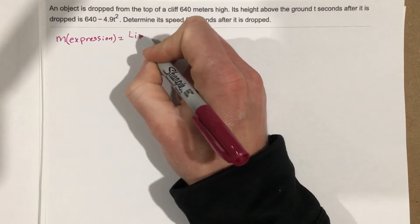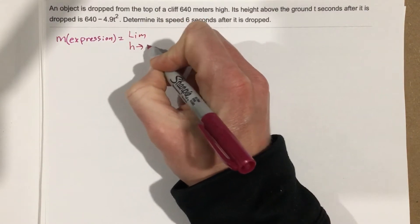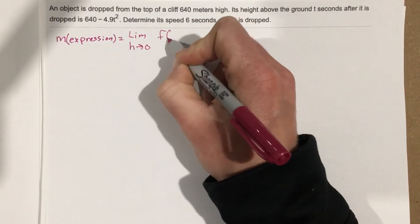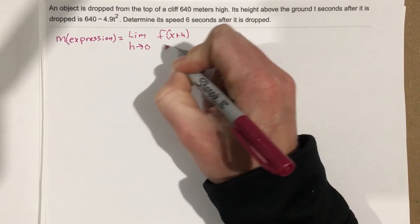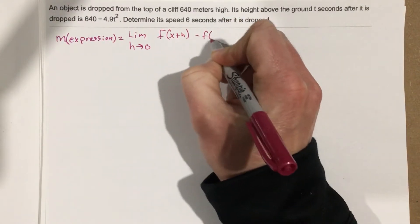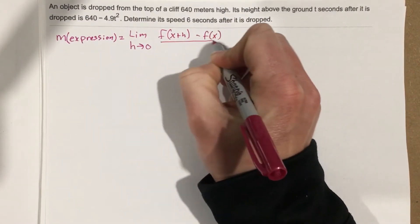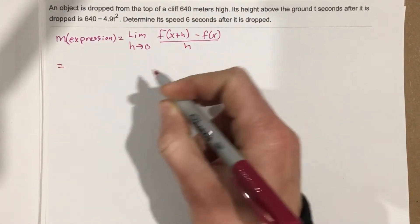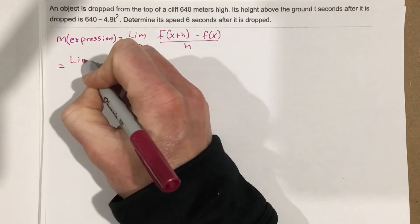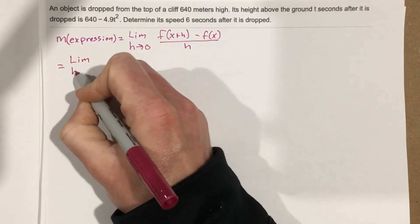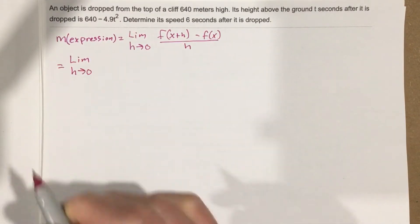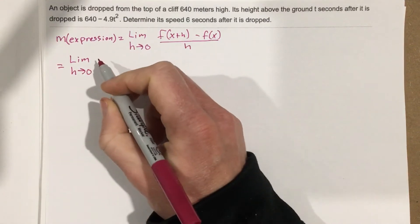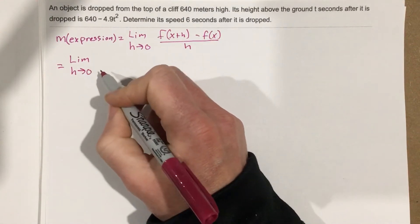We're going to say that this is the limit as h approaches zero, f of x plus h minus f of x, all over h. So we're going to get the limit as h approaches zero. Remember, we want to find an instantaneous speed there.